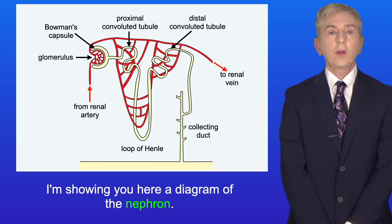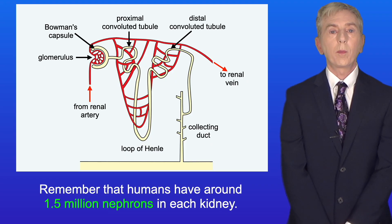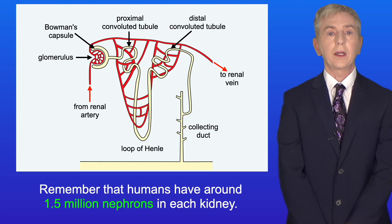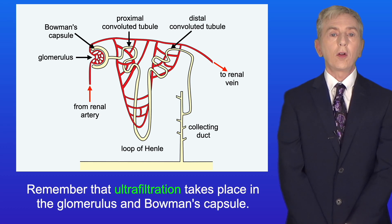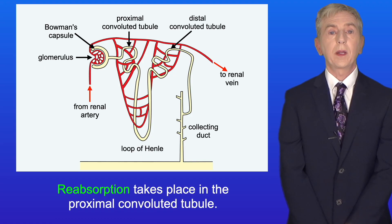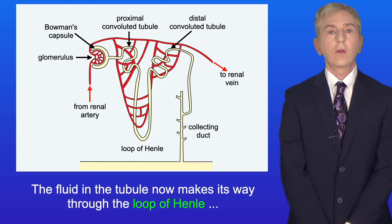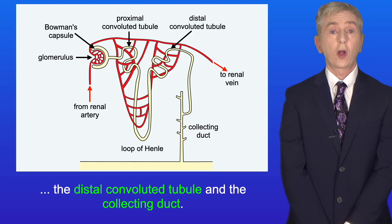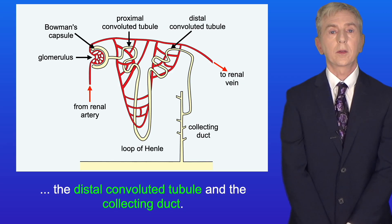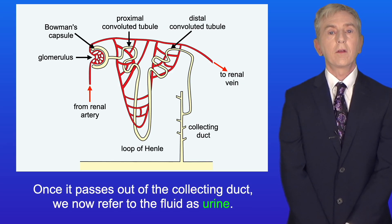I'm showing you here a diagram of the nephron, and remember that humans have around 1.5 million nephrons in each kidney. Remember that ultrafiltration takes place in the glomerulus and Bowman's capsule, and reabsorption takes place in the proximal convoluted tubule. The fluid in the tubule now makes its way through the loop of Henle, the distal convoluted tubule, and the collecting duct. And once it passes out of the collecting duct, we now refer to the fluid as urine.